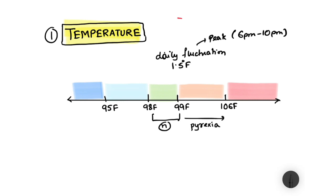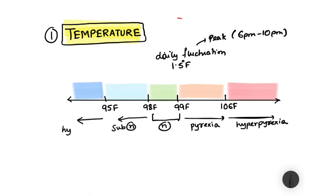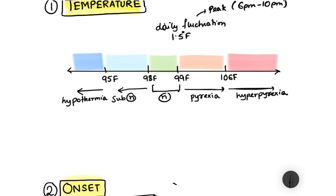If the temperature is more than 106°F, that is known as hyperpyrexia. If the temperature is below 98°F we call that subnormal, and if below 95°F, that is hypothermia. So the scale goes: hypothermia, subnormal, normal, pyrexia, and hyperpyrexia. Our focus will be on hyperpyrexia and hypothermia as these are relatively new concepts.